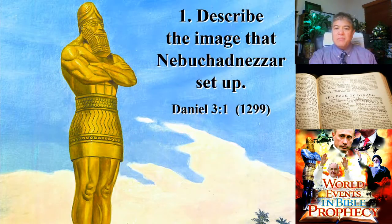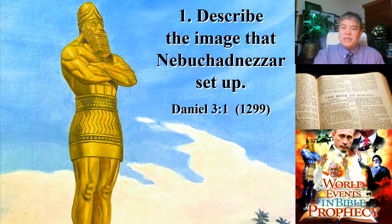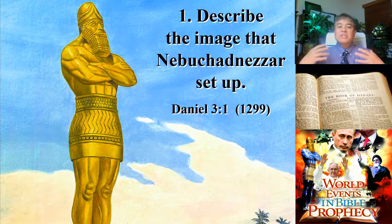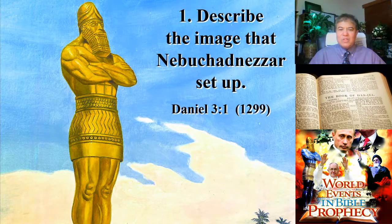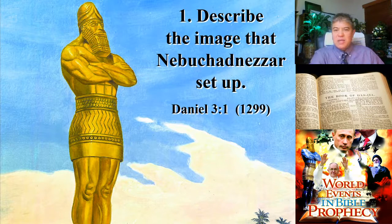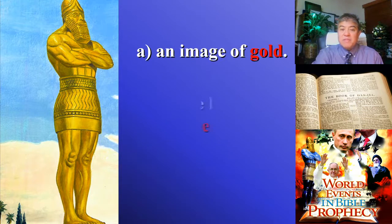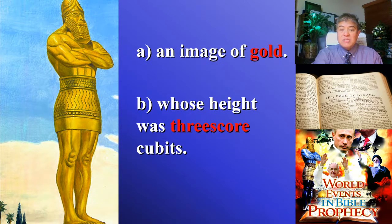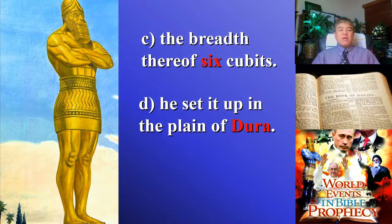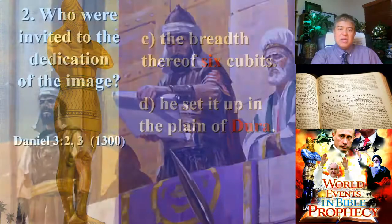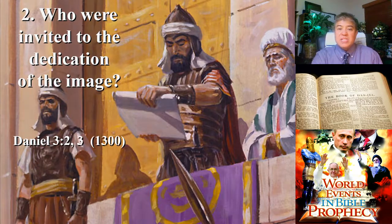As a review: in Daniel 2, Nebuchadnezzar was told he was the head of gold. So as we enter Daniel chapter 3, verse 1, he said, 'My kingdom will live forever,' and made a whole image entirely of gold — representing that if he could get the whole world to worship just him, he would be the only kingdom. The image was solid gold, its height was sixty cubits, its breadth was six cubits. He set it up on the Plain of Dura in what is Iraq today, so many people could see it from a great distance.